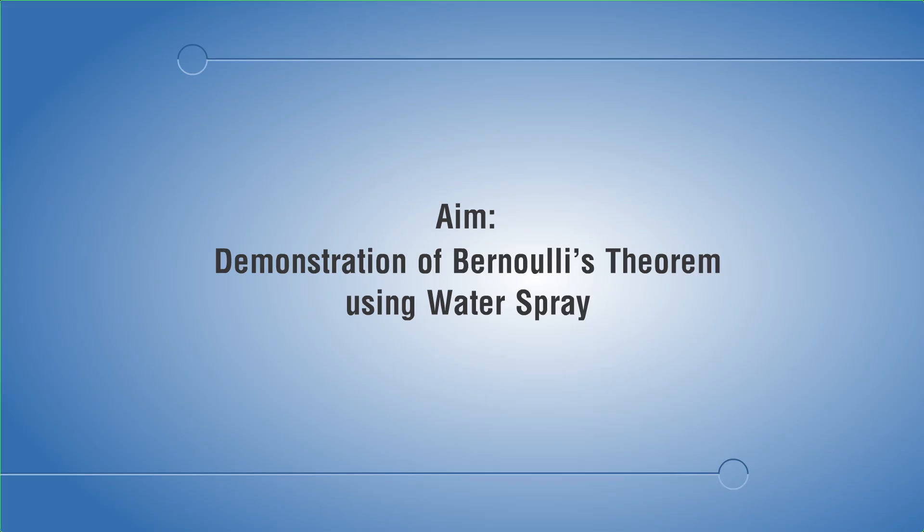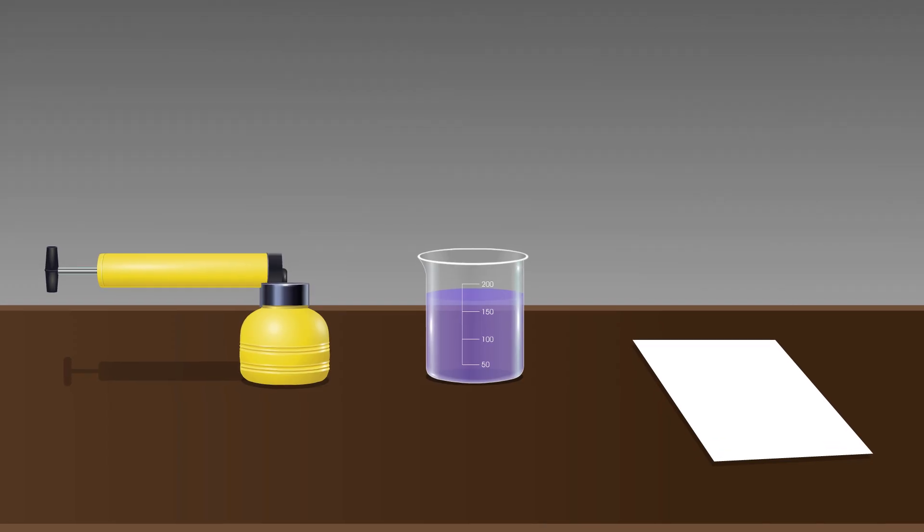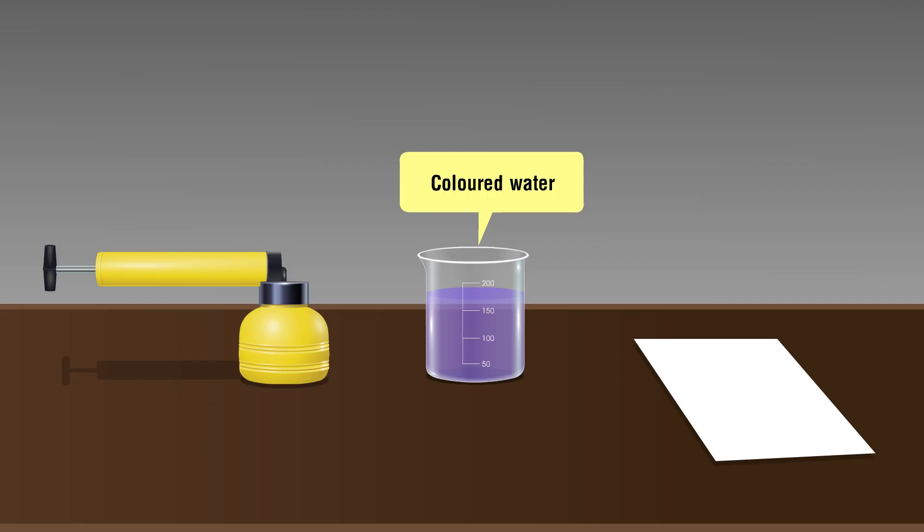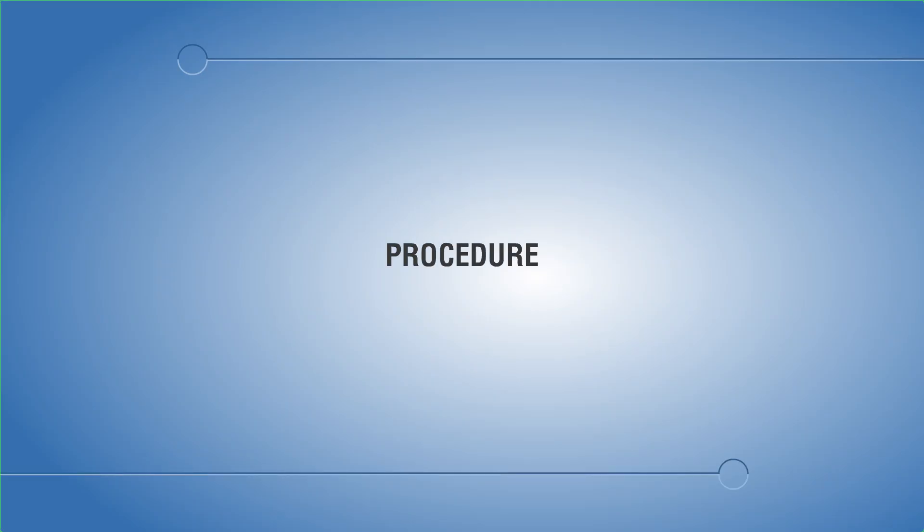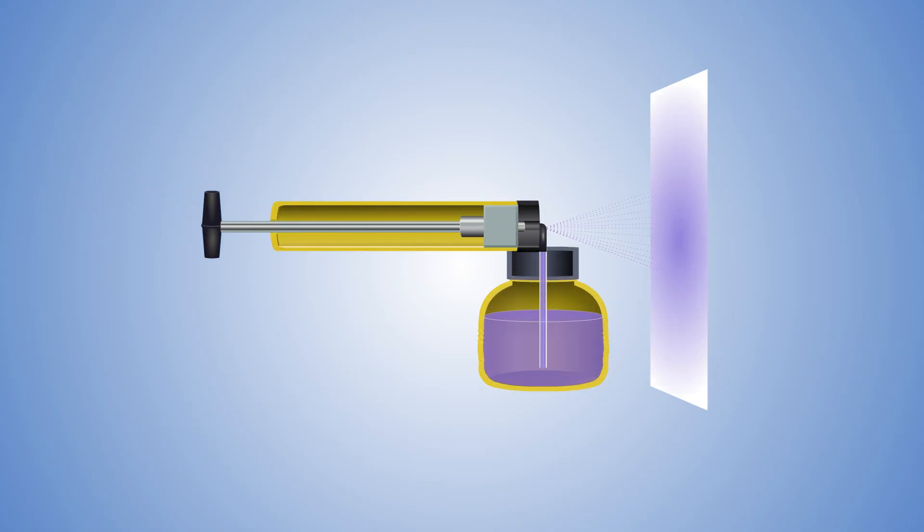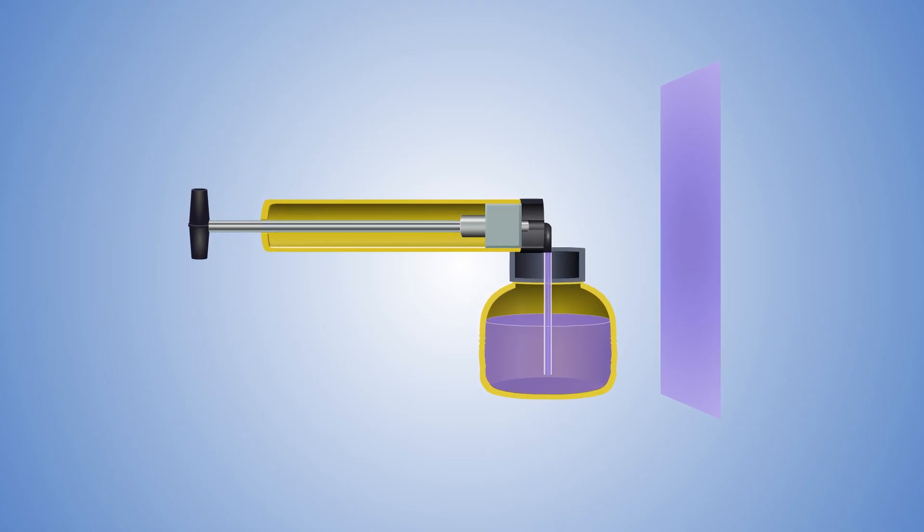Fourth illustration: aim demonstration of Bernoulli's theorem using water spray. Materials required: insecticide pesticide spray pump, colored water, a paper. Procedure: place paper near pesticide spray pump, press piston of pesticide spray pump. Observation: colored water rises and sprayed into the paper.